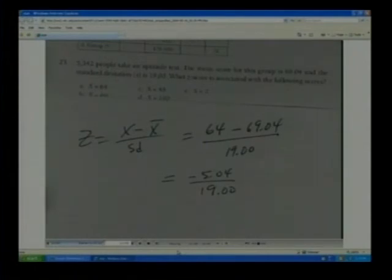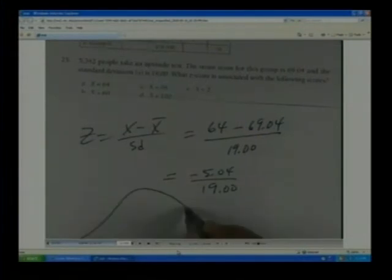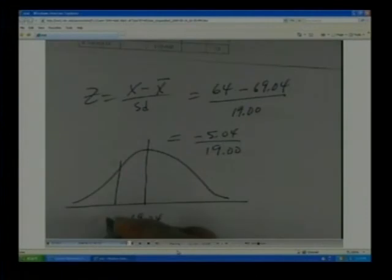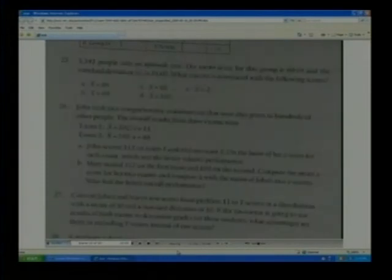That gives us the z-score which is going to be a little bit greater than -0.25. It's important as you go through and work through these to be able to draw it, make a drawing. Here's the mean 69.04, here's the value we're looking for, 64. So you know that we should be able to expect a z-score that's negative. That's how that particular problem would be worked.